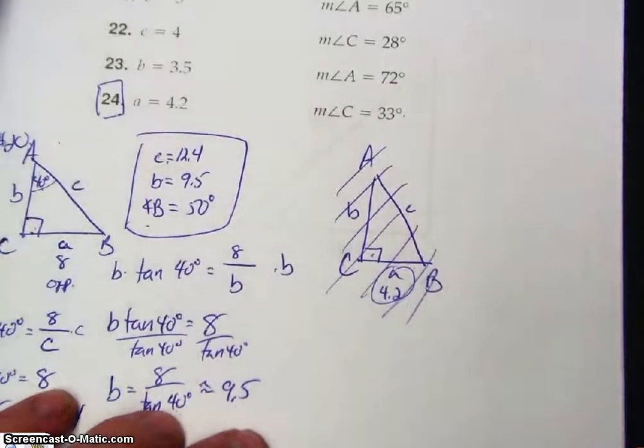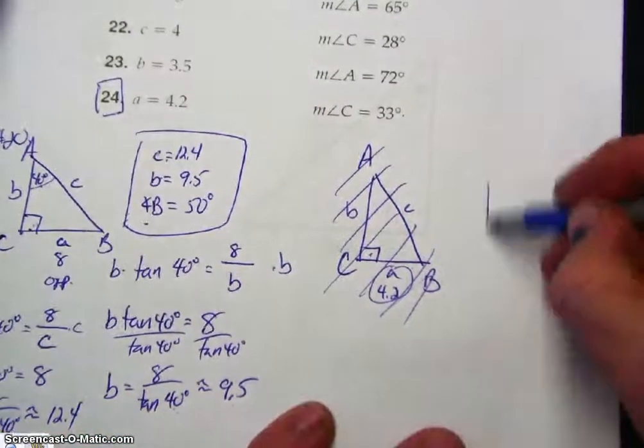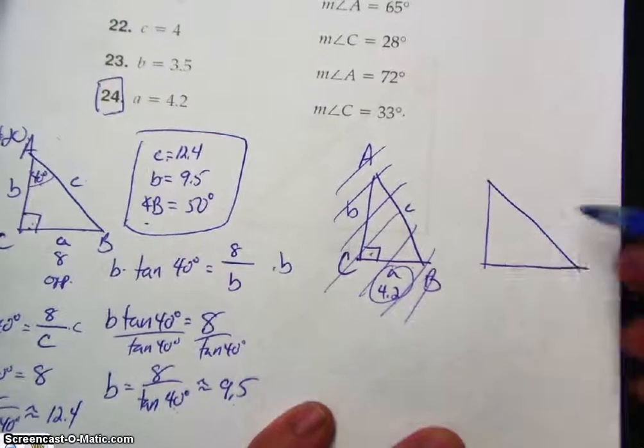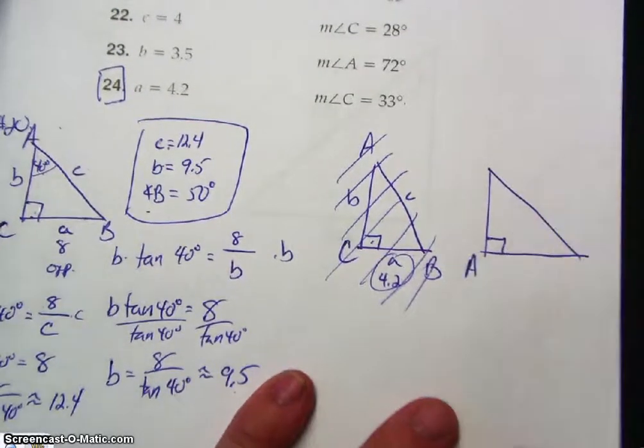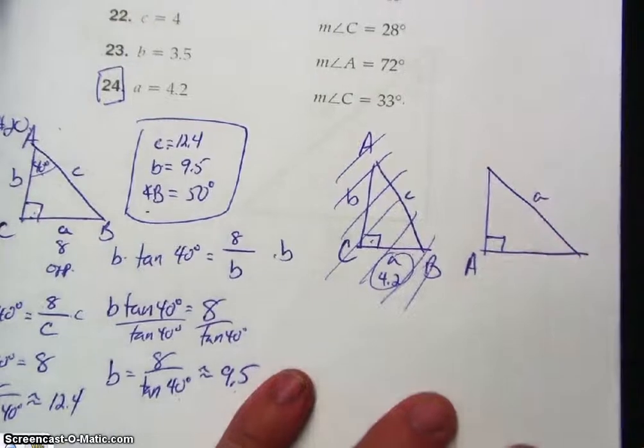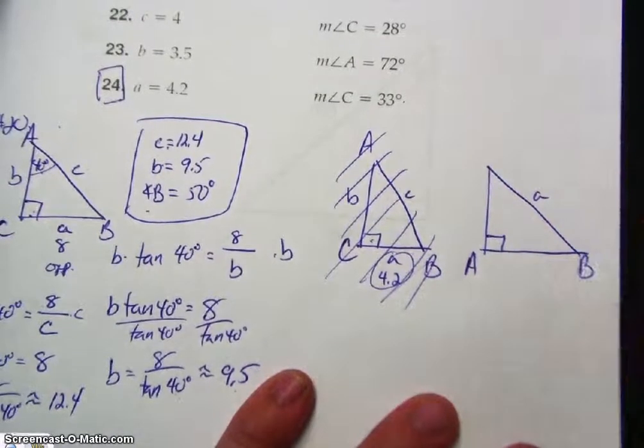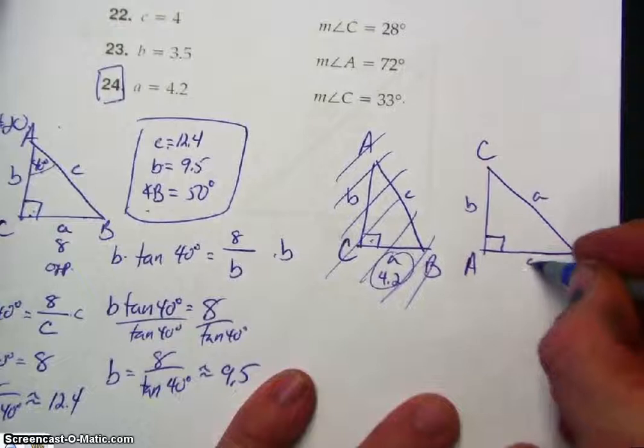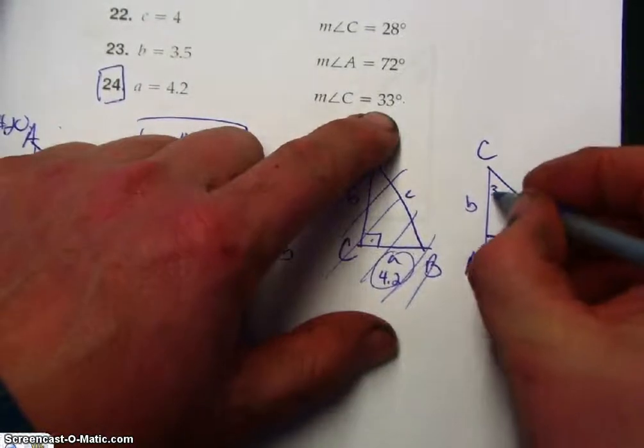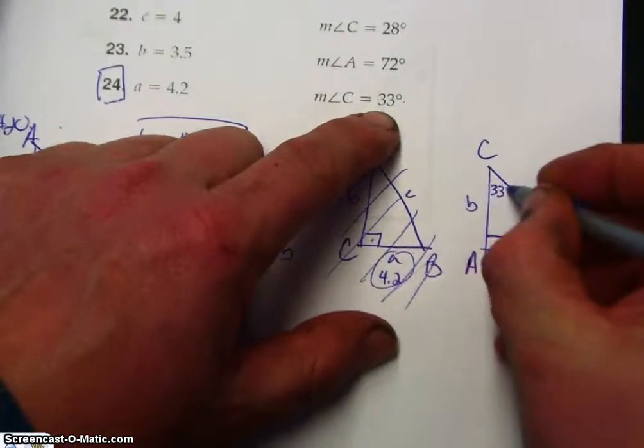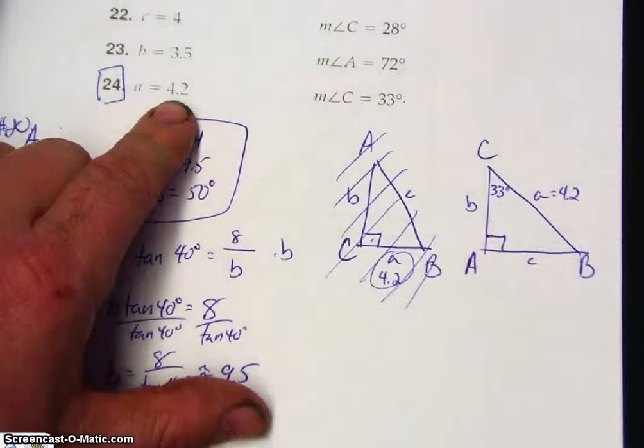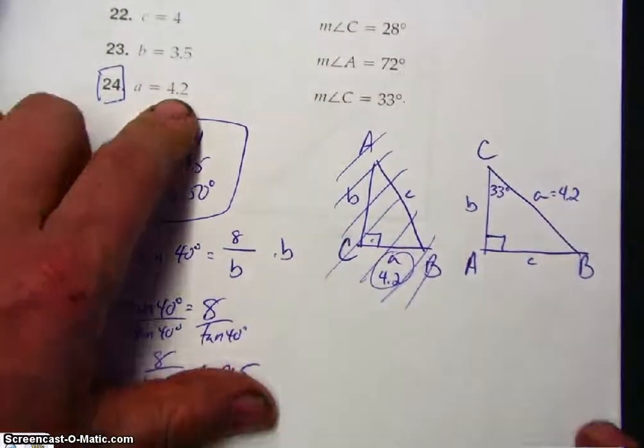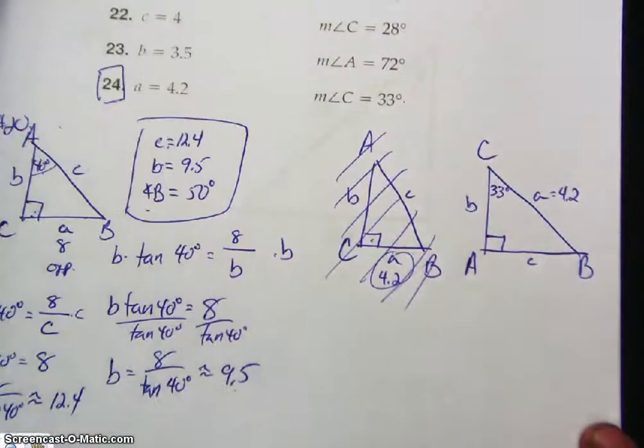All right, so they're not saying—they're saying A, B, and C can be whatever. So we'll make angle A that. So side A is the hypotenuse. Angle B, so this is side B. Angle C, this is side C. So this is saying 33 degrees. A is, in other words, the hypotenuse is 4.2. All right, so I'm going to use a trig function.